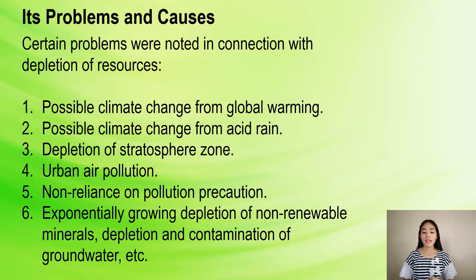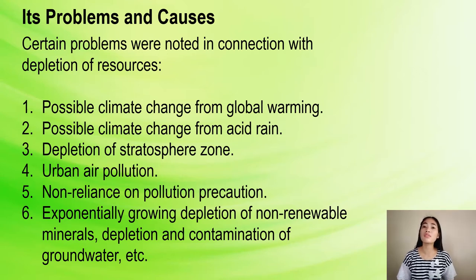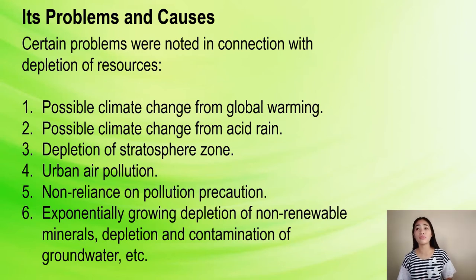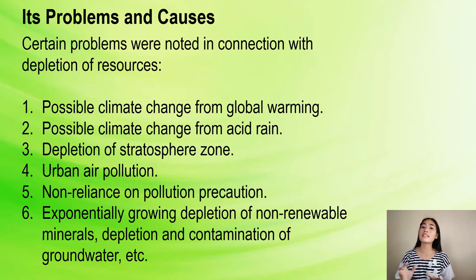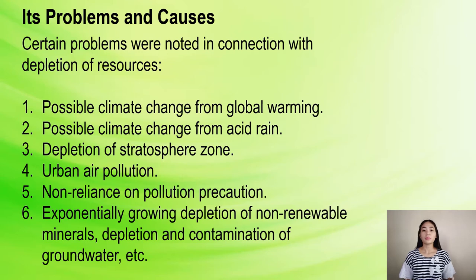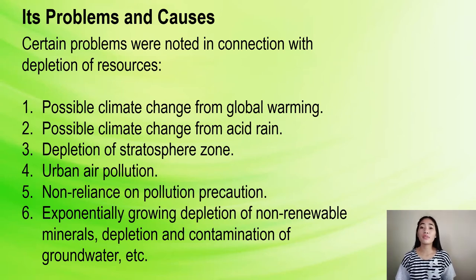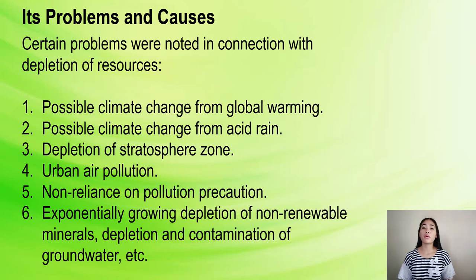Second is possible climate change from acid rain. Acid rain is caused by a chemical reaction that begins when compounds like sulfur dioxide and nitrogen oxides are released into the air. These substances rise high into the atmosphere where they mix and react with water, oxygen, and other chemicals to form an acidic pollutant known as acid rain. Third is depletion of the stratospheric ozone layer. Scientists discovered that thinning of the ozone layer was caused by increasing concentrations of ozone-depleting chemicals such as chlorofluorocarbons (CFCs) — compounds with chlorine and/or fluorine attached to carbon — and to a lesser extent, halons.